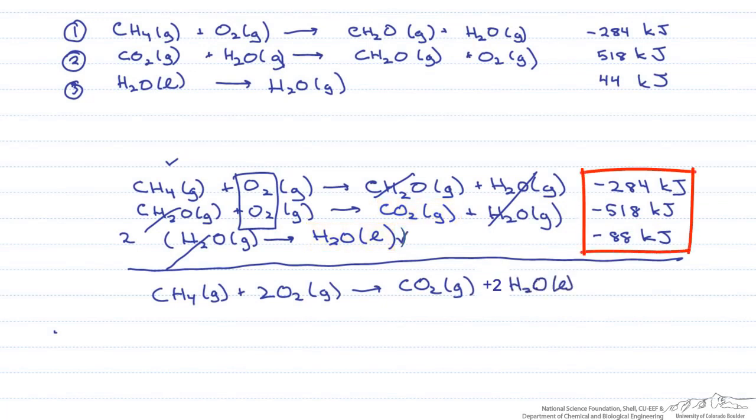Now we add up all these numbers, which equals minus 890 kilojoules, and we have our delta heat of reaction for the combustion of methane.